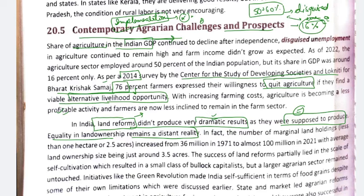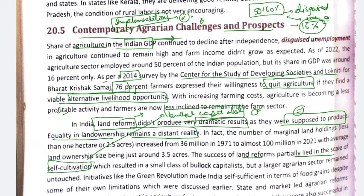The size of marginal and small land holdings will increase in coming years. The success of land reforms was partial — mainly in the scale of self-cultivation. We got a class of bullock capitalists who cultivated their own land. But the larger agrarian sector remained untouched. Although the government wanted to do something, because of implementation problems and people's approach, it was not possible. The green revolution also came with benefits as well as demerits.